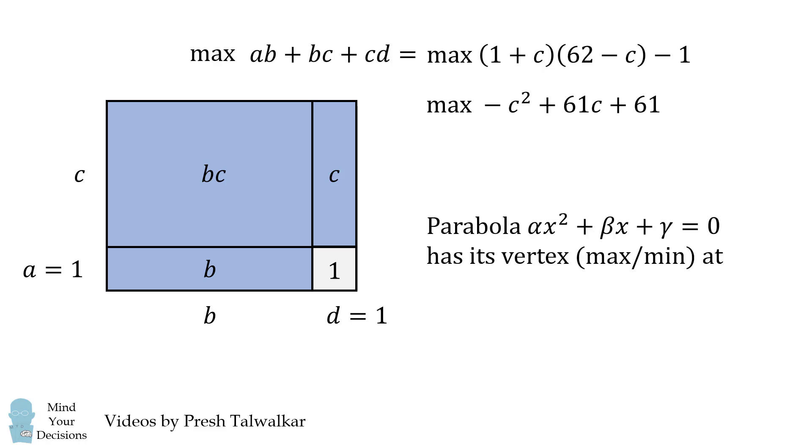In a parabola with an equation alpha x squared plus beta x plus gamma is equal to 0, we know that its maximum and minimum will be at its vertex, and its vertex happens when x is equal to negative beta over 2 alpha, and alpha cannot be equal to 0. If we use this formula for the expression we're trying to maximize, we end up that C needs to be equal to negative 61 over negative 2, and this simplifies to be 30.5.